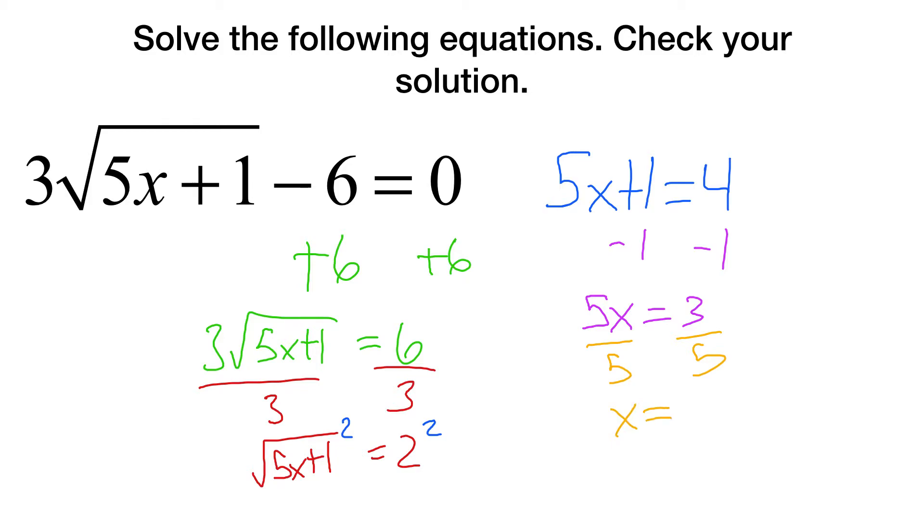x equals 3 fifths. If I plug this back in, this becomes 3 times the square root of 3 fifths of 5 is just 3 plus 1 minus 6. So that's 3 square roots of 4 or 3 times 2. So that's 6 minus 6 equals 0. 6 minus 6 is 0. Yep, meaning our answer is good.